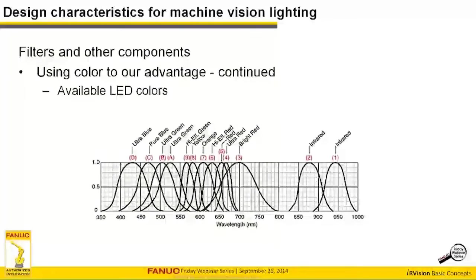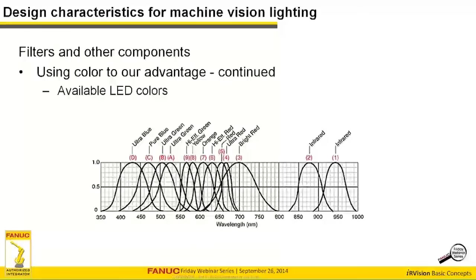There are only a certain number of LED colors that can be created based on the physics of silicon and the photodiode. People often think you can get an LED in any color, but there's a specific list of what's available. White LEDs, as we've learned, are actually blue LEDs — a blue LED that energizes phosphors on the inside of its lens.